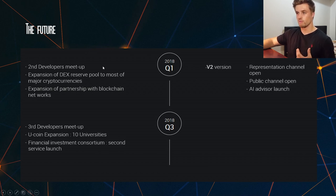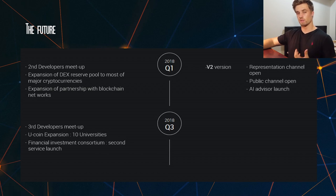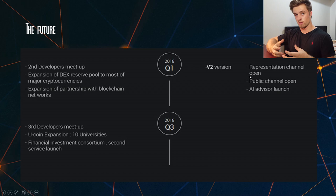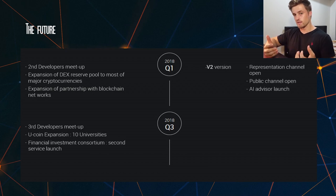They've got a short roadmap but as we can see here, they've got the expansion of their pool to allow for most major cryptocurrencies, and also expanding their partnerships with blockchain networks. They're launching their mainnet and looking to consolidate and start getting some growth on this platform, because that's really going to determine its success — how much it gets used and how much it gets mass adopted.